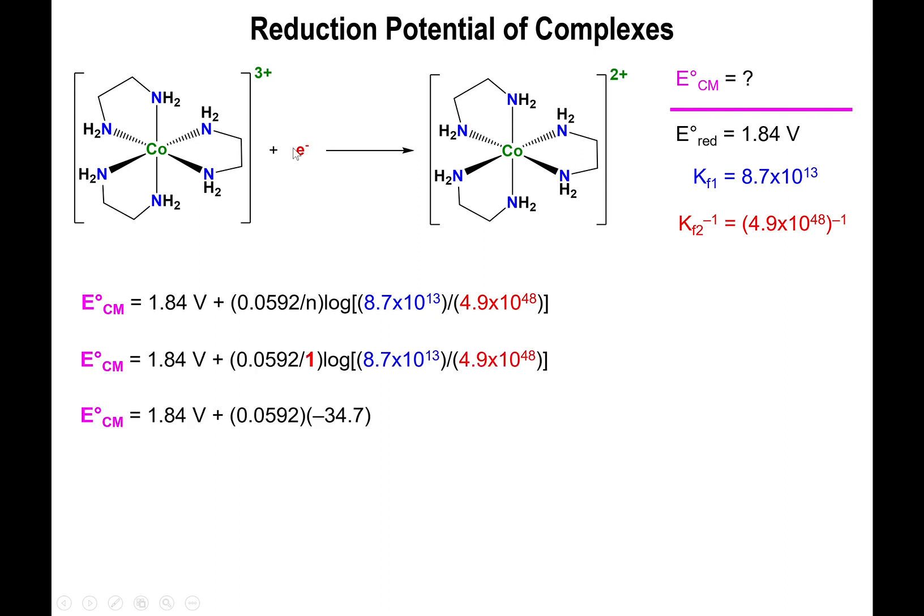And also we're only dealing with one electron. So n equals 1. So 8.7×10^13 divided by 4.9×10^48. If you take the log of that, you get -34.7. Multiply by 0.0592 yields -2.06. And when we apply that to the potential, the reduction potential, we find out that this is -0.22.